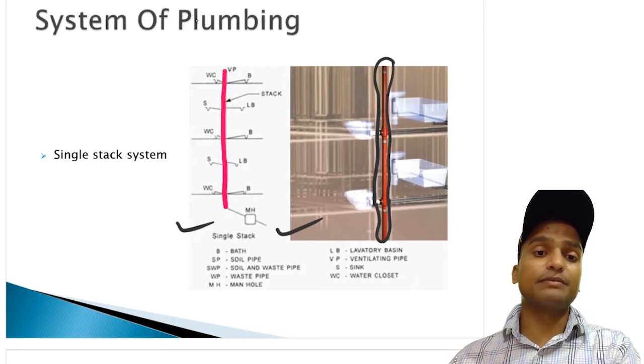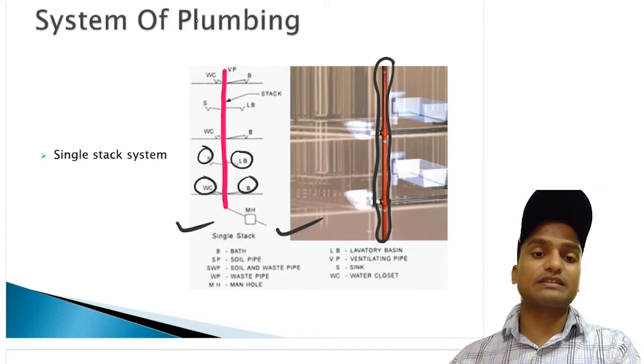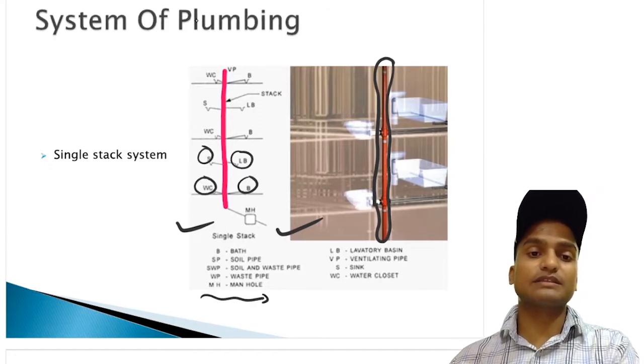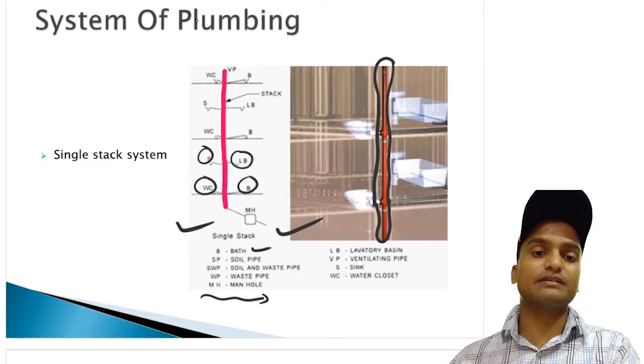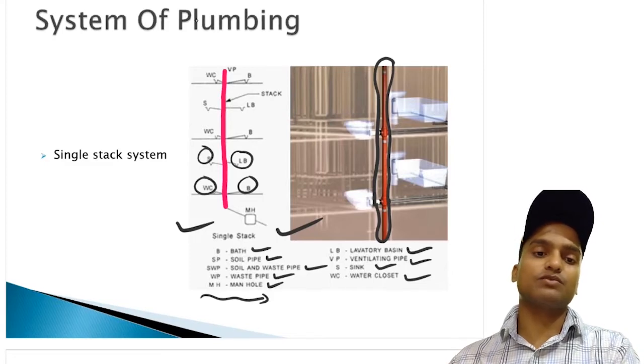You can clearly see in the diagram different notation made WC, S, LB and B. All these notations stand for these things like B for bath, SP for soil pipe, WP is for waste pipe, WC means water closet, S means sink, VP means ventilating pipe and MH means main hole.